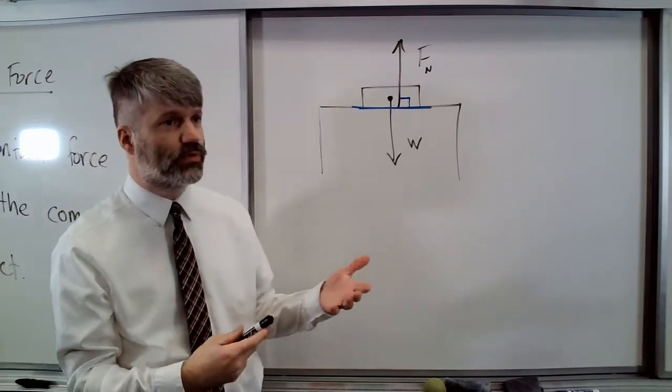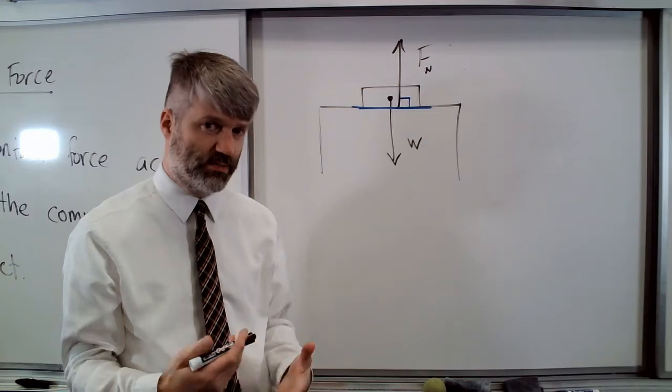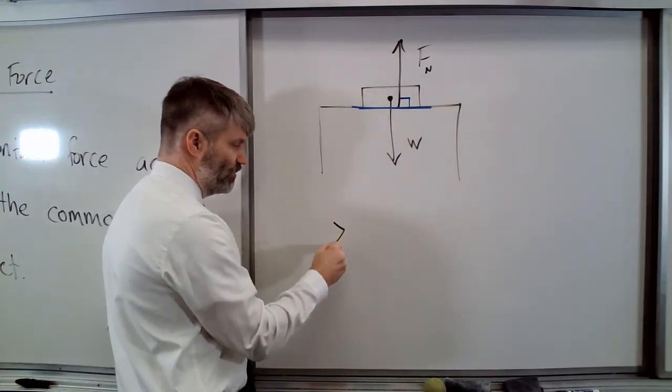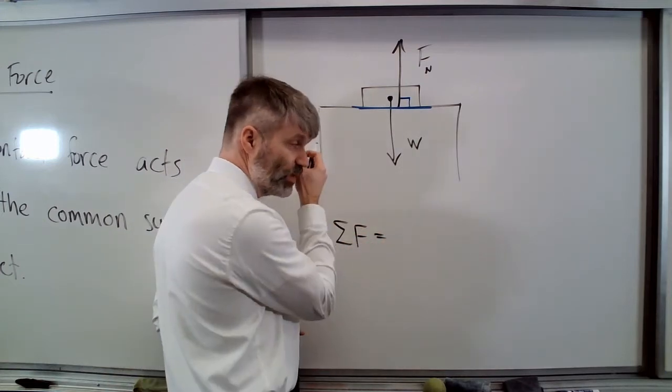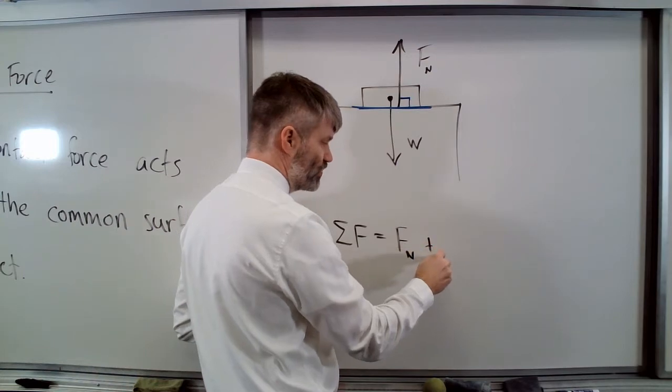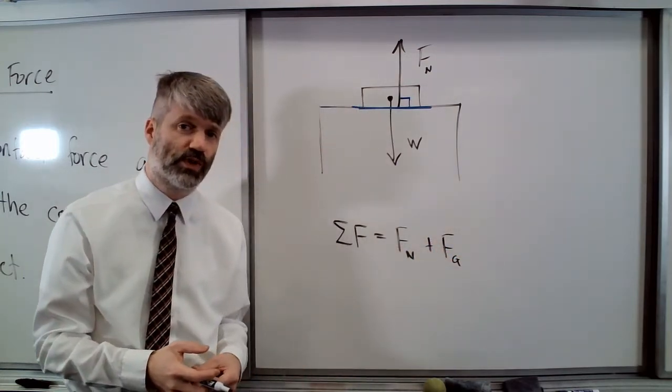A book resting on the table is about the easiest examination we can do of a normal force. If we add up these forces, we have the normal force in the upward direction, the force due to gravity in the downward direction.